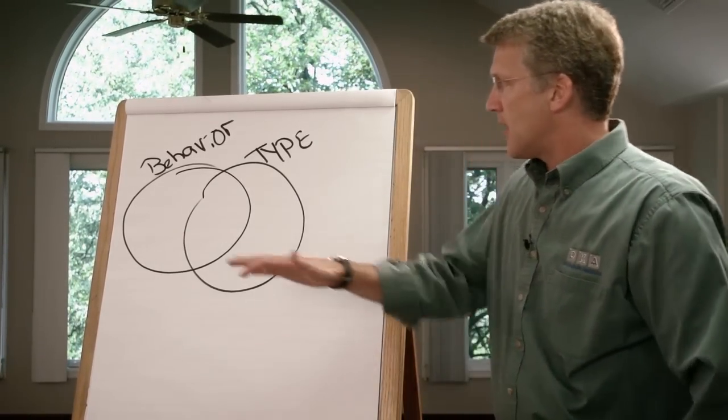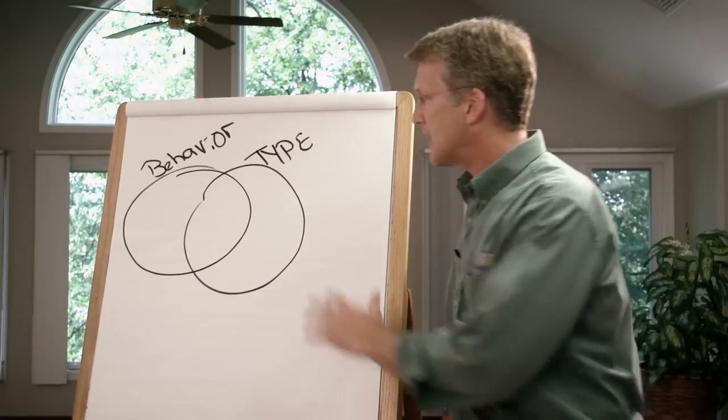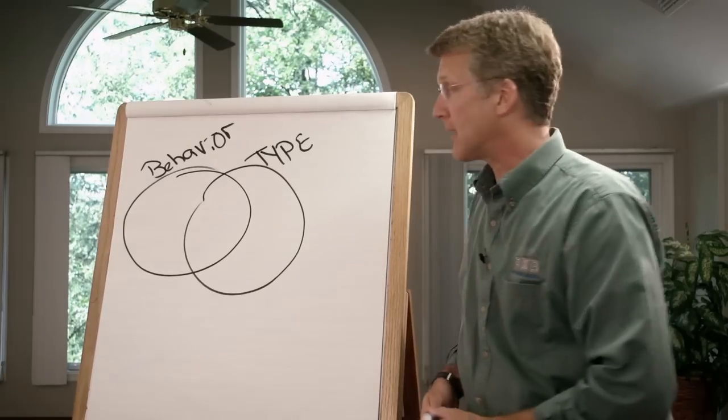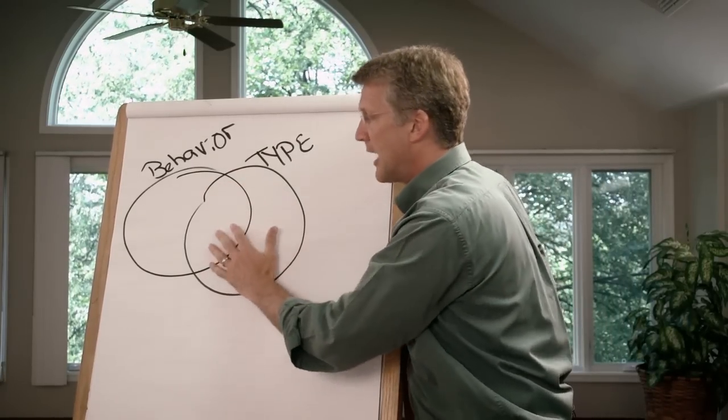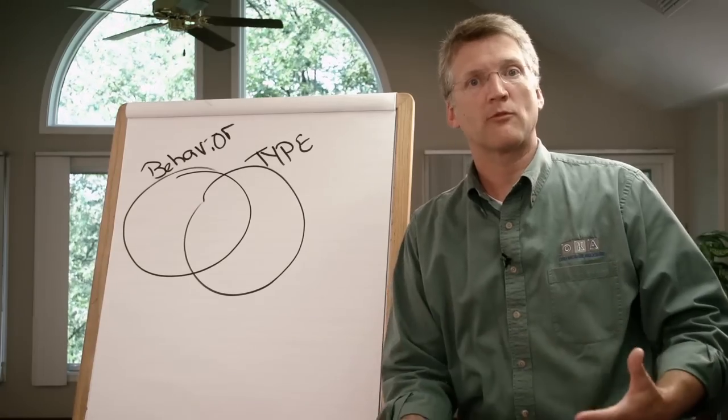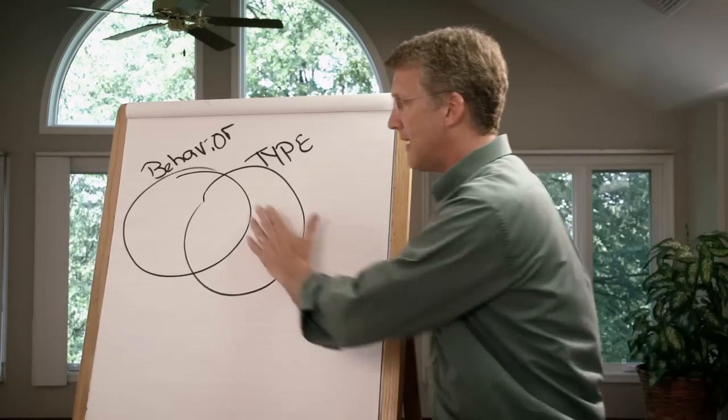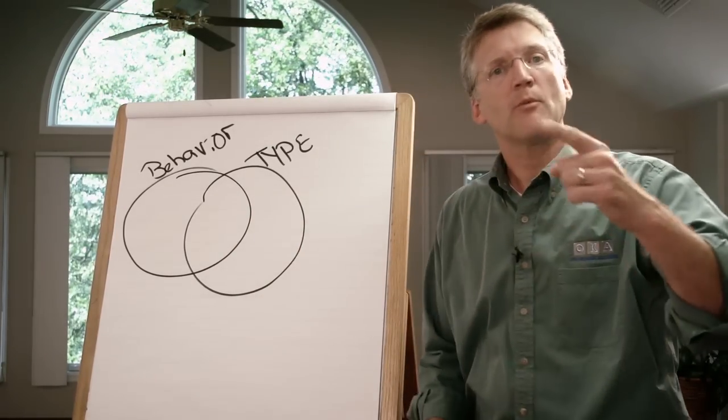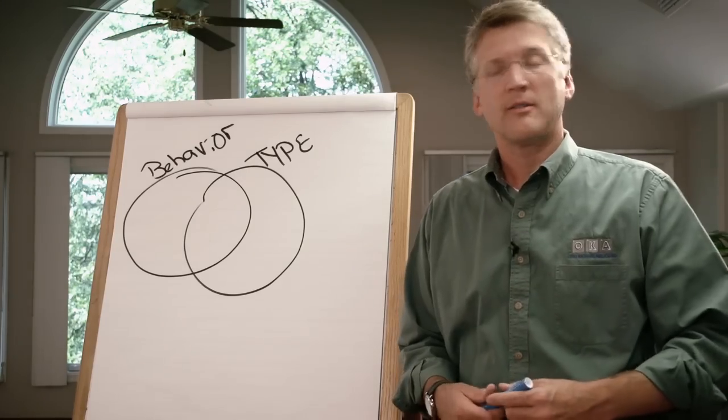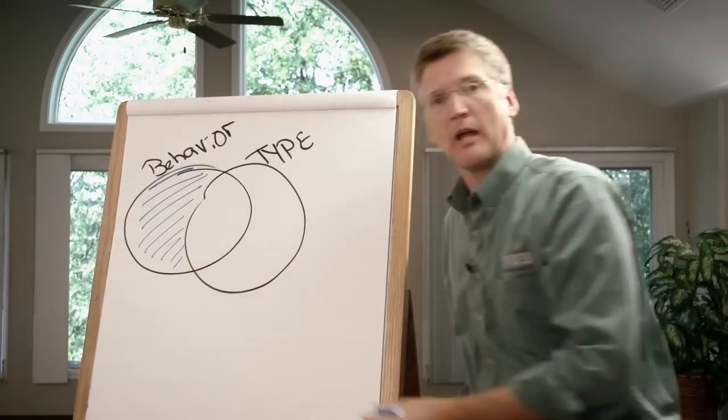Now, realize that there are many aspects of your behavior that actually coincide with your type. In fact, we understand that type lets us understand why we make those behavioral choices. Why you have a tendency to do this or that. And that's in accordance with your type. But there are many aspects of your type that are outside, and many aspects of your behavior that are outside of your type.